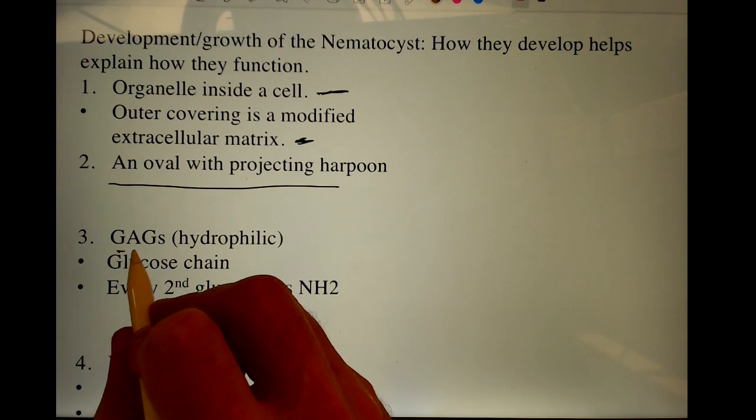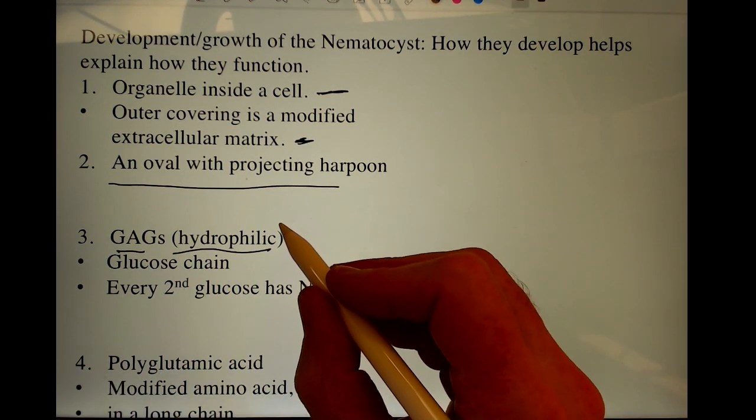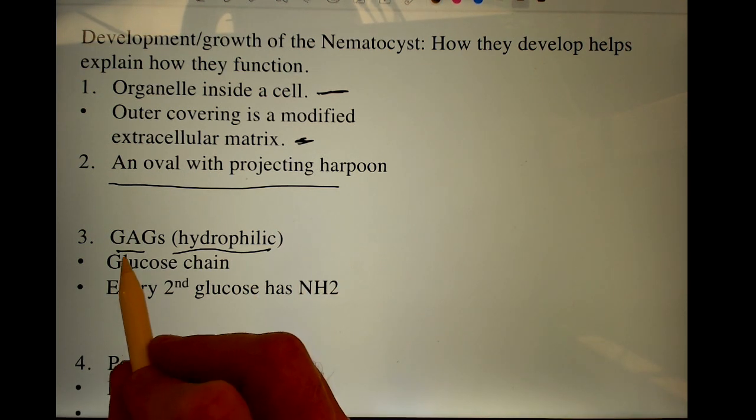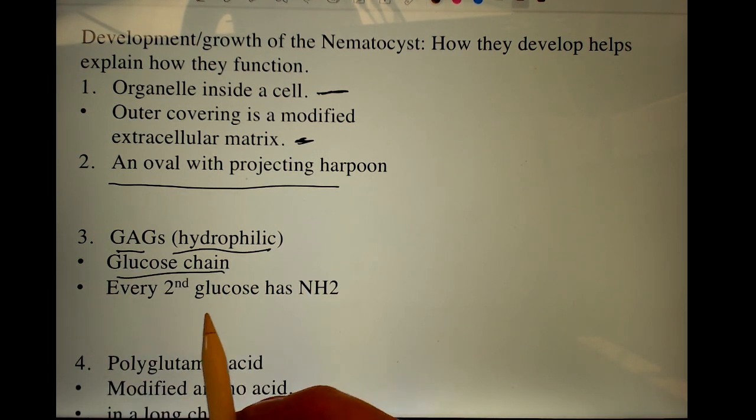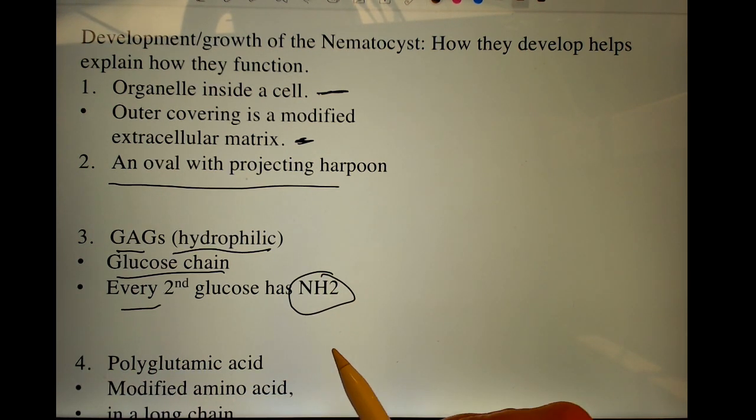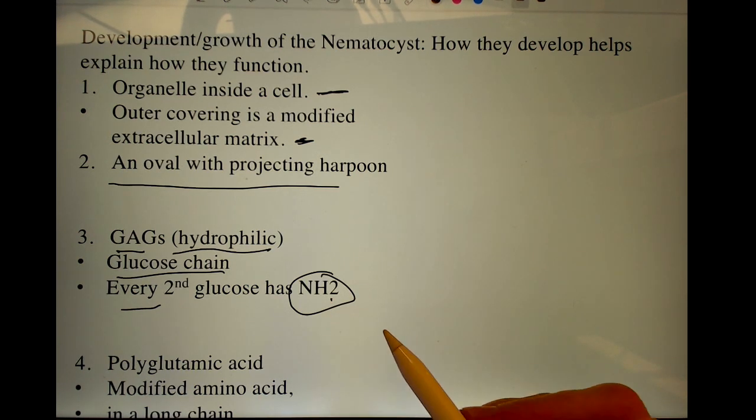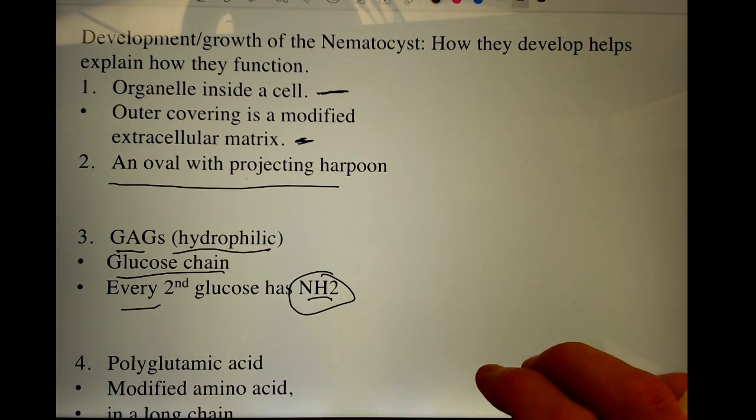The inside includes glycosaminoglycans. These are very water-attractive molecules. Glycosaminoglycans, GAGs, are a glucose chain, but every second glucose has an amino group. The glucose itself is very hydrophilic. It absorbs water really easily. And the amino groups also will pick up a lot of water.